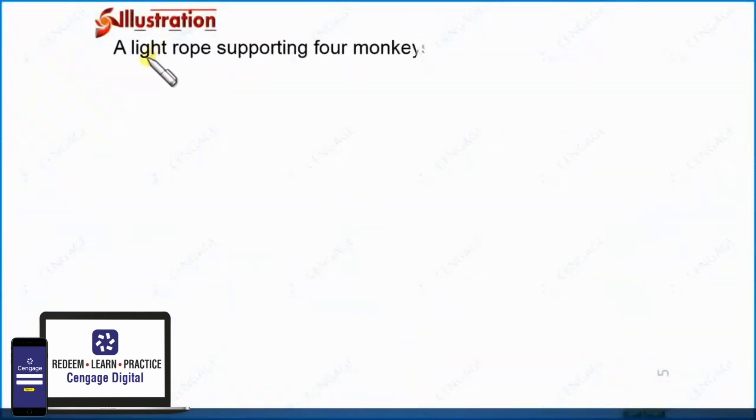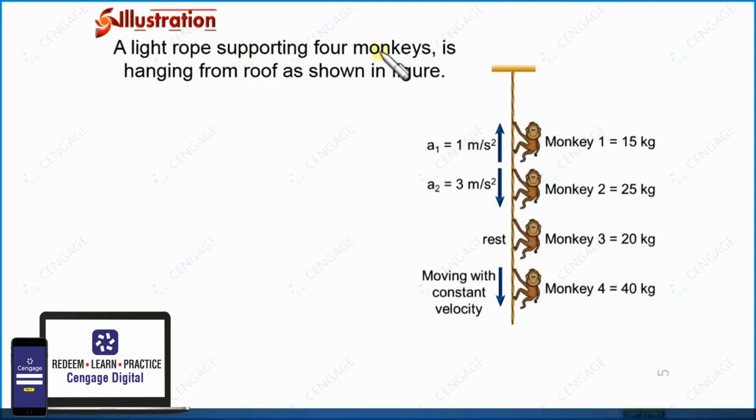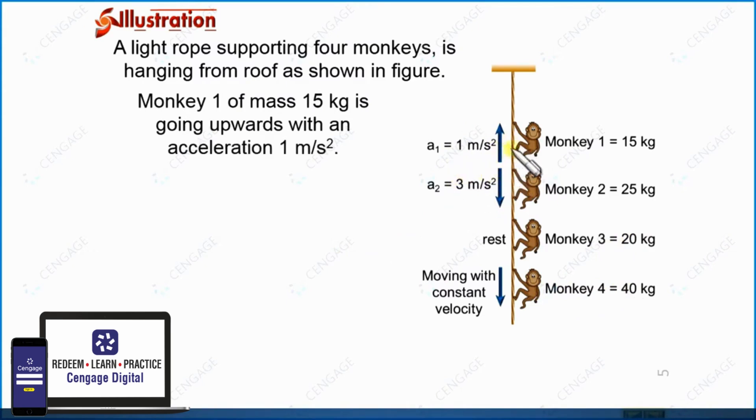In this illustration, it is given a light rope supporting four monkeys. You can follow the diagram. These are the four monkeys: monkey 1 is 15 kg, monkey 2 is 25 kg, monkey 3 is 20 kg, and monkey 4 is 40 kg.